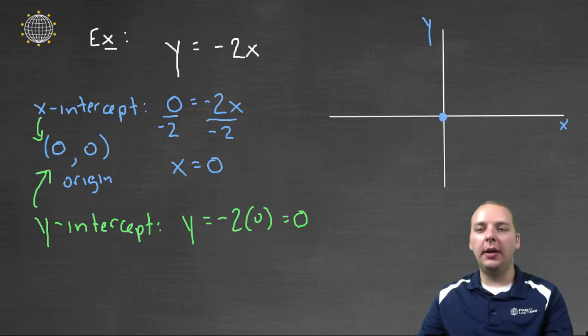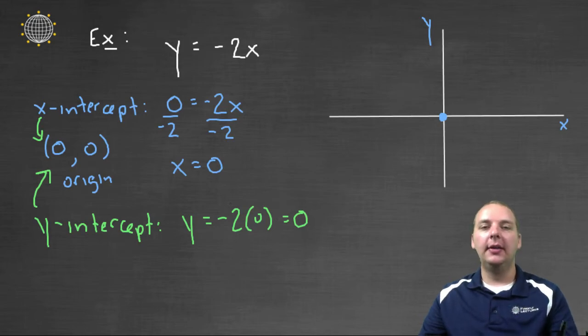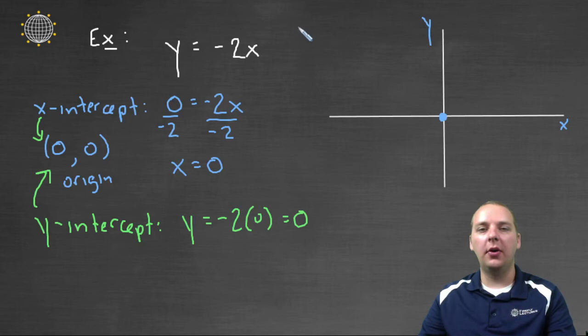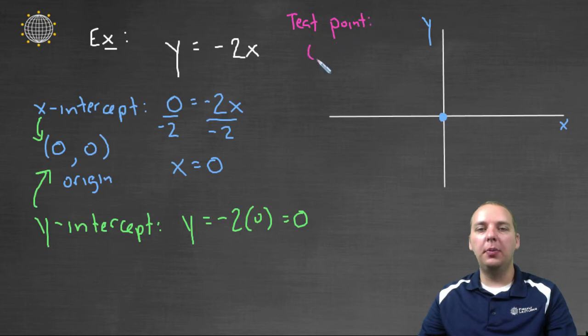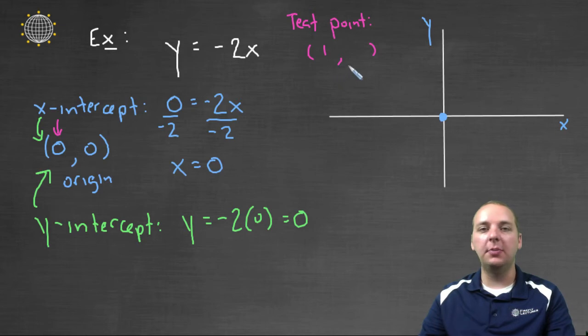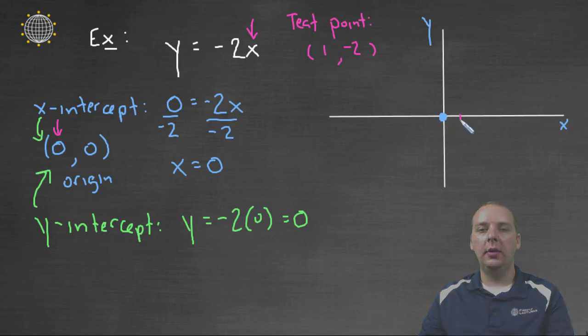So here's where I will bring in a test point, an extra point, that used to be an option, now it's no longer an option. So for the test point, what I'm going to do is I'm going to plug in any x-value that hasn't already been used. So I'm not going to use zero, but any other x-value is fine, even one, just something other than zero. If we plug in one for x, negative two times one makes negative two. So this is an ordered pair that's on the graph of this line. And so I'll plot that, I'll plot one, comma negative two, that's down here.